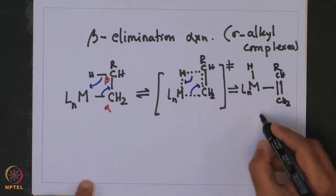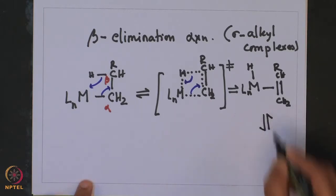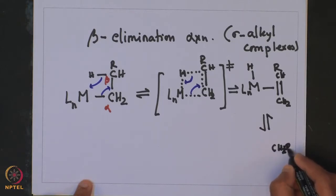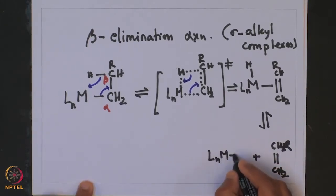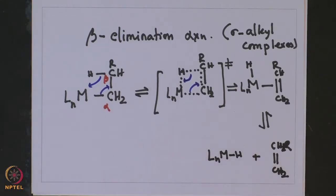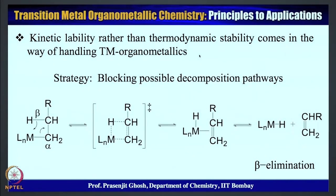This concerted pathway results in a metal hydride and a coordinated olefin. These can finally eliminate the olefin plus a metal hydride. This results in decomposition of metal alkyl compounds having beta hydrogen, and is a very spontaneous reaction leading to decomposition of many metal alkyl complexes.